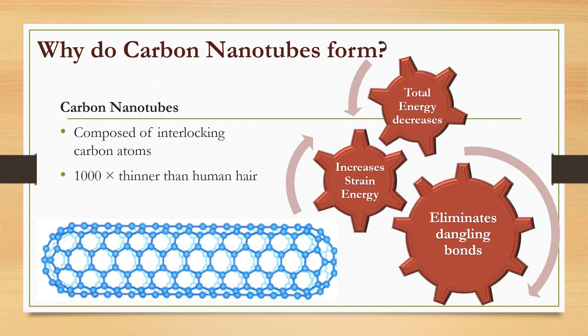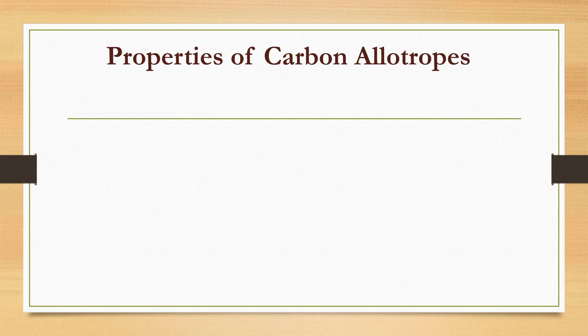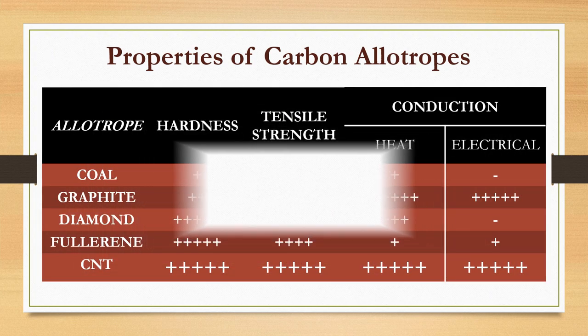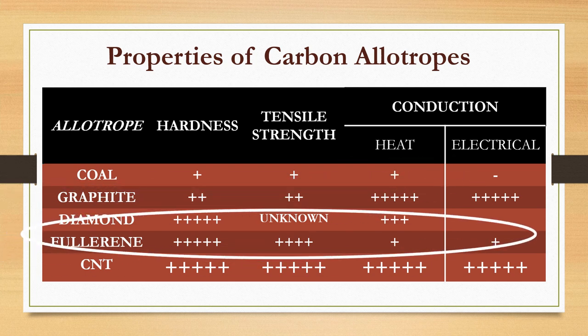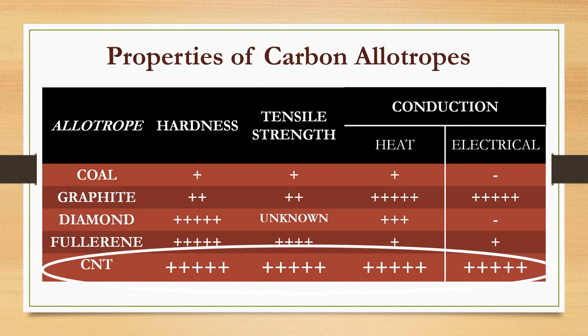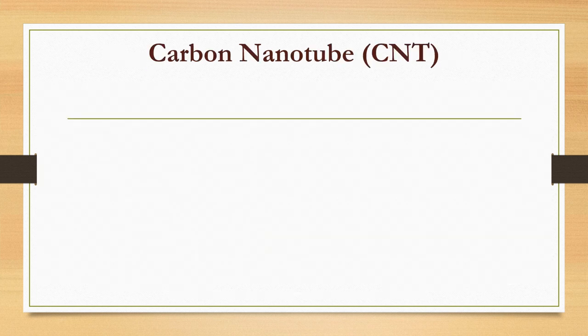Carbon nanotubes are composed of interlocking carbon atoms which are a thousand times thinner than an average human hair but can be 200 times stronger than steel. The table lists various properties of carbon allotropes on a relative scale, with CNTs topping the list.